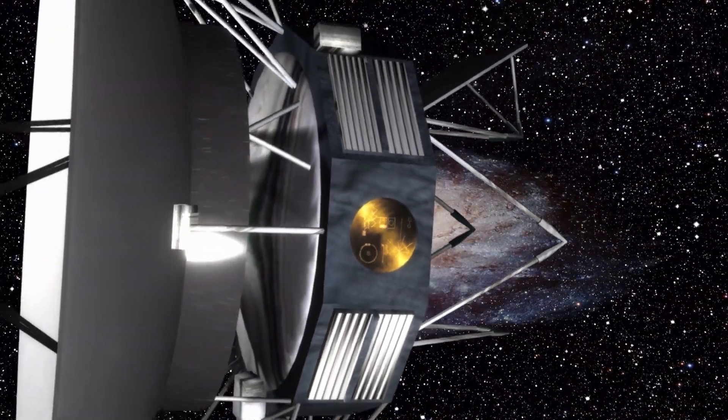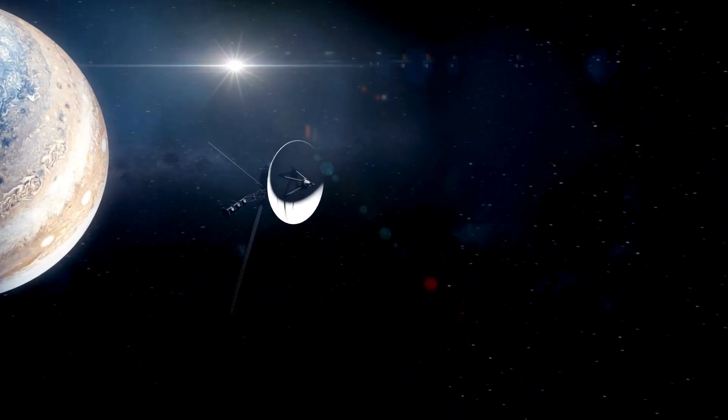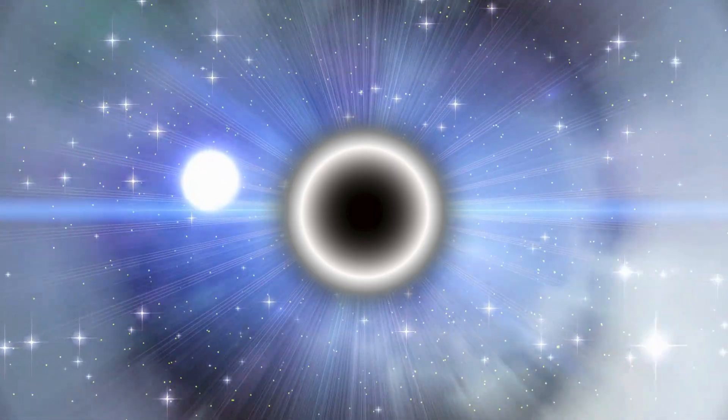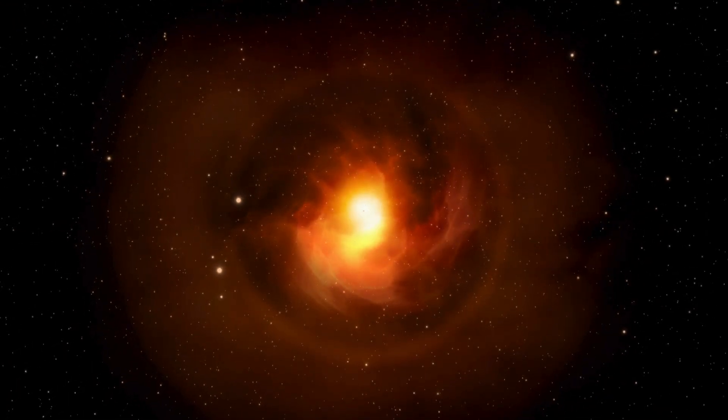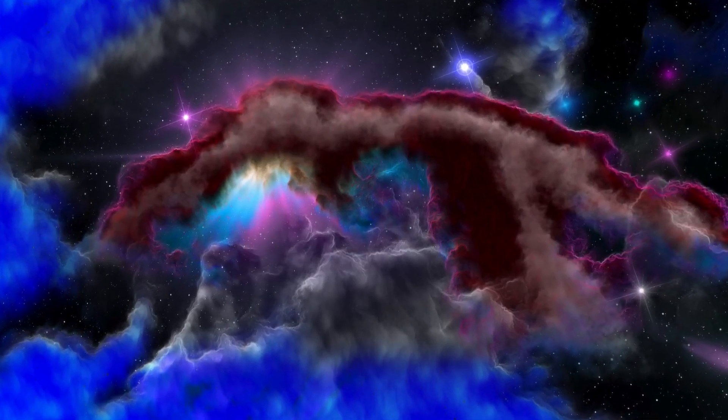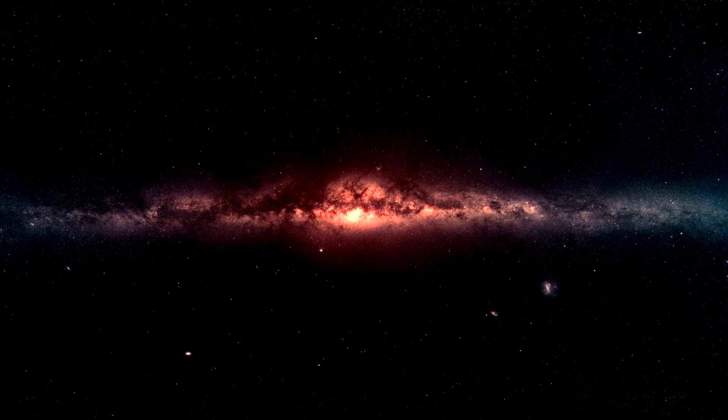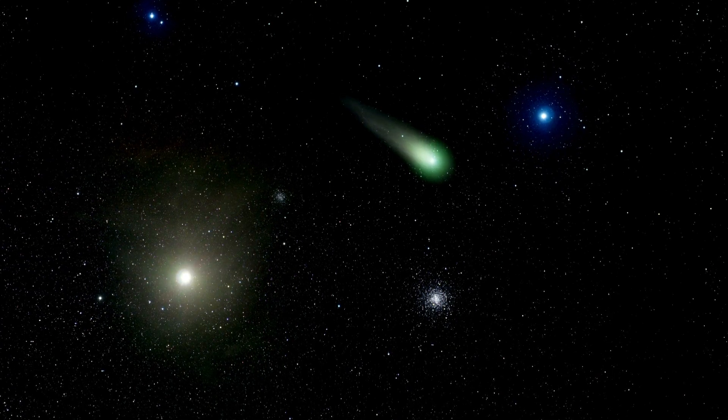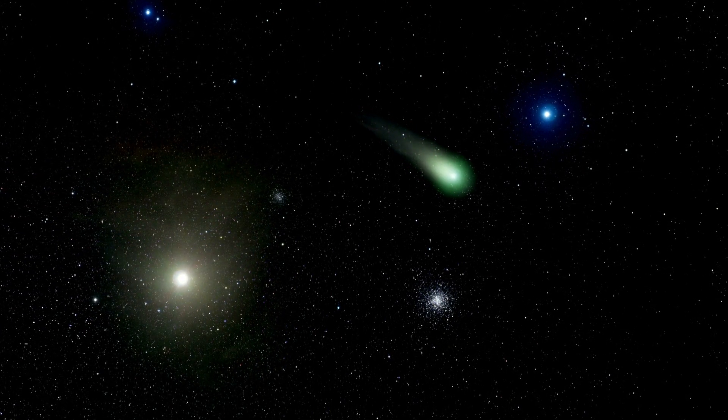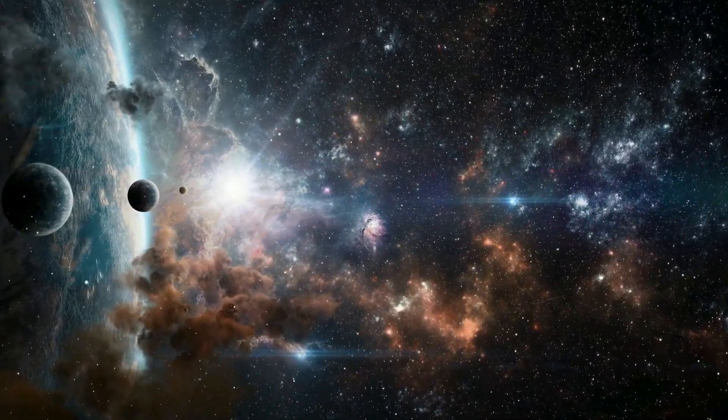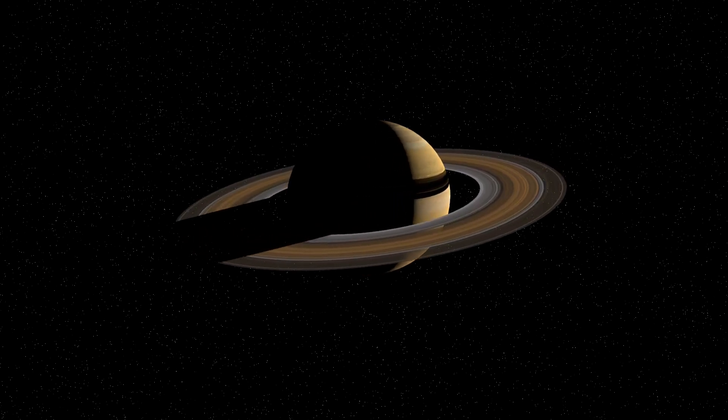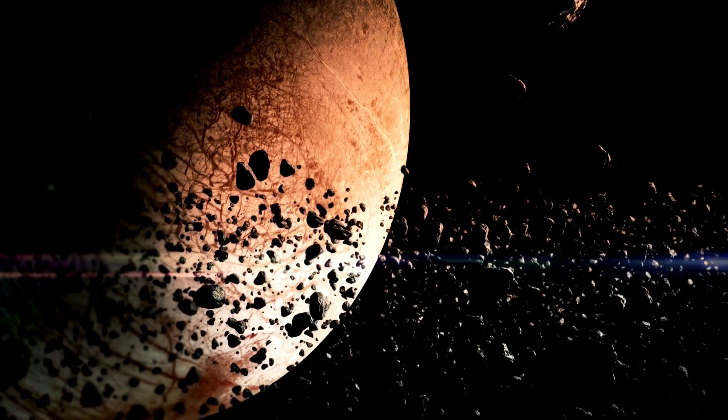Voyager 1 was never supposed to last this long. It wasn't built to whisper across the stars for nearly half a century. And it certainly wasn't designed to uncover the mysteries of interstellar space. But that's exactly what it has done. What began as a mission to explore our outer planets has become a story of cosmic proportions. A moment where science brushes against the edges of philosophy and awe inspires new questions. This spacecraft drifting silently more than 15 billion miles from home continues to teach us. The data anomalies, the successful corrections, the plasma wave patterns.